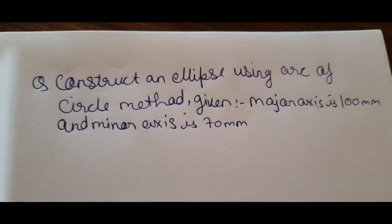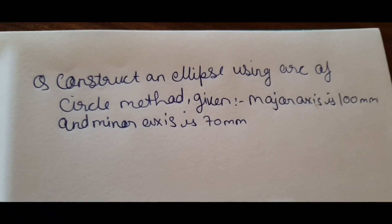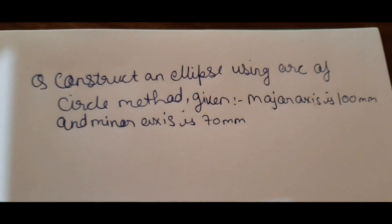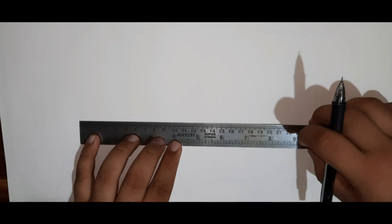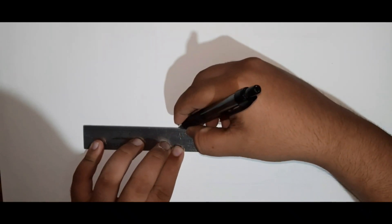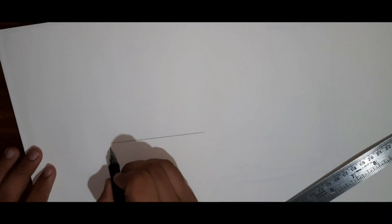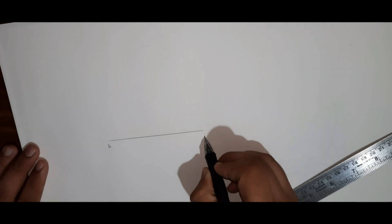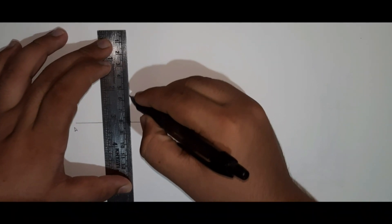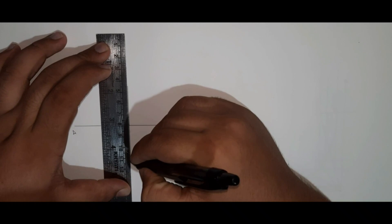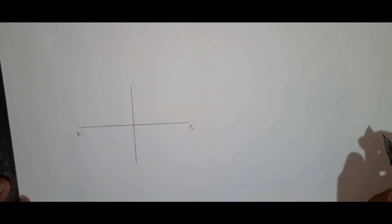The second question is: construct an ellipse using the arc of circle method, given major axis is 100mm and minor axis is 70mm. Draw a line AB of 100mm which is equal to 10cm.